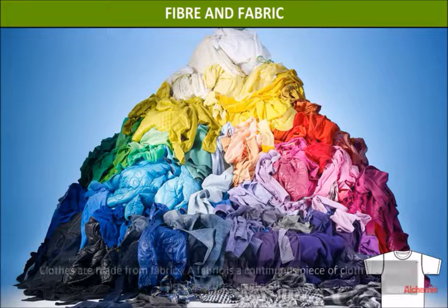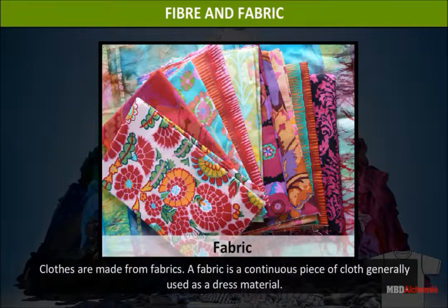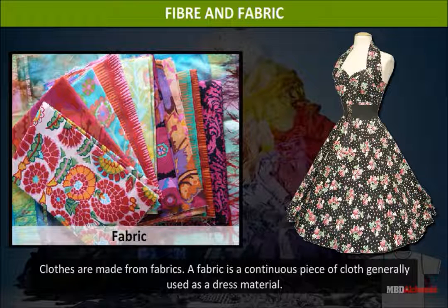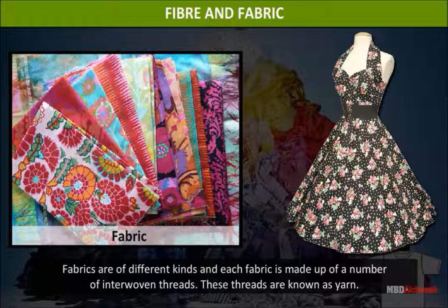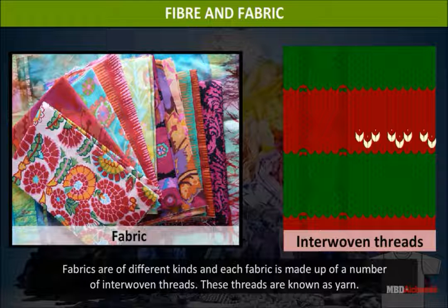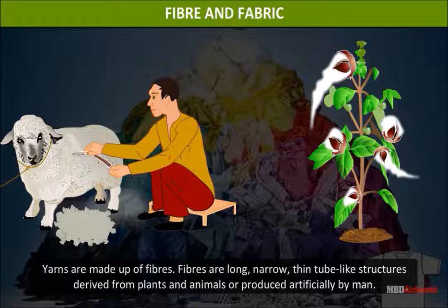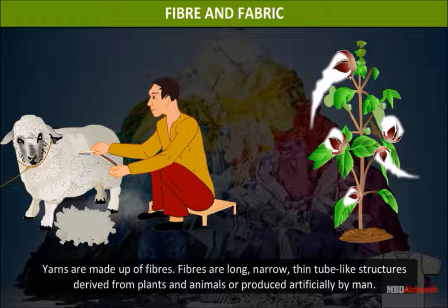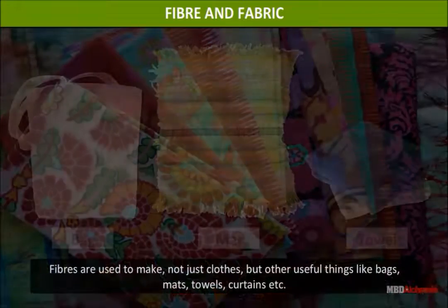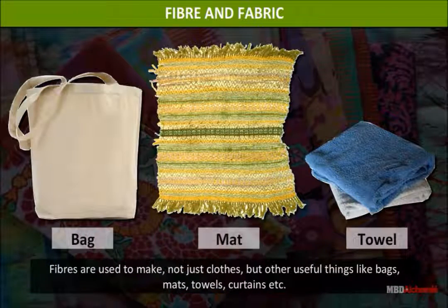Fiber and fabric: Clothes are made from fabrics. A fabric is a continuous piece of cloth generally used as a dress material. Fabrics are of different kinds, and each fabric is made up of a number of interwoven threads. These threads are known as yarn. Yarns are made up of fibers. Fibers are long, narrow, thin tube-like structures derived from plants and animals, or produced artificially by man. Fibers are used to make not just clothes but other useful things like tents, bags, mats, towels, and curtains.